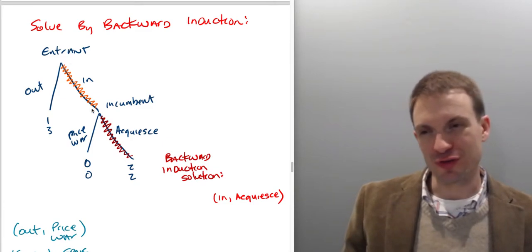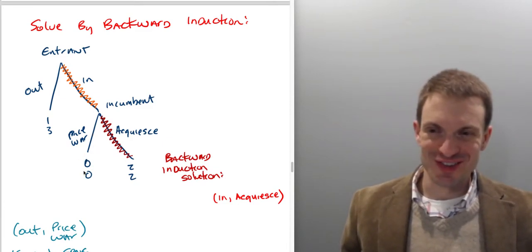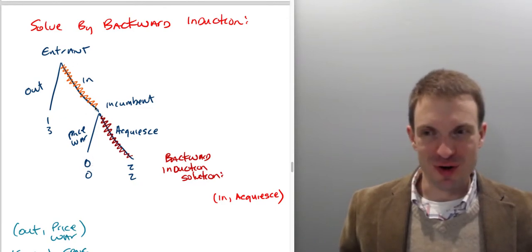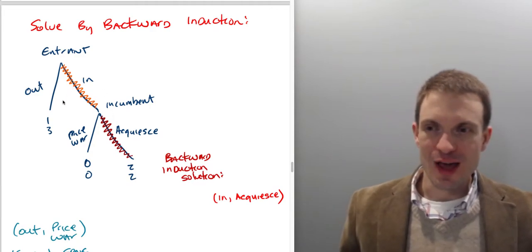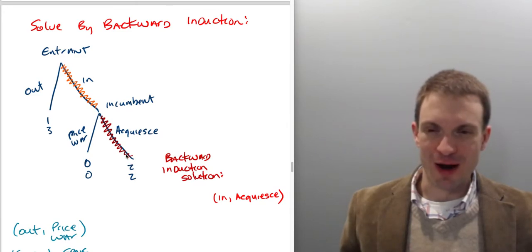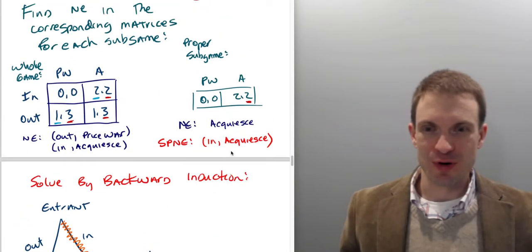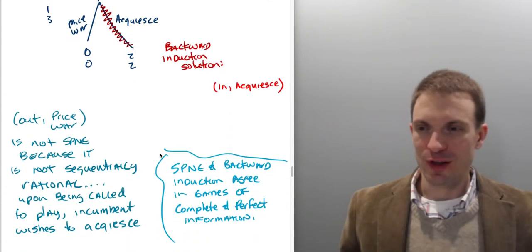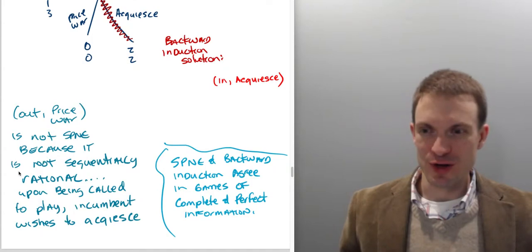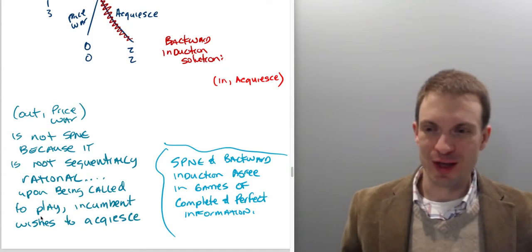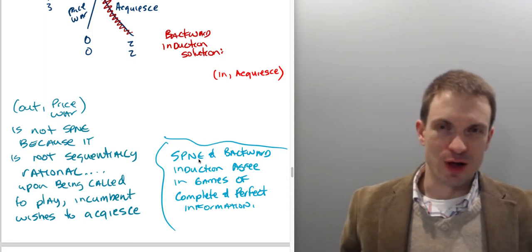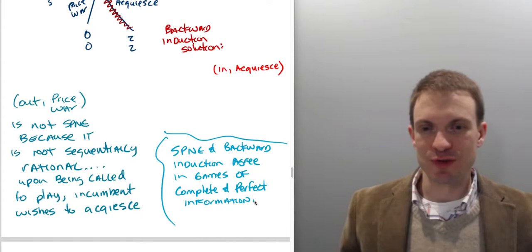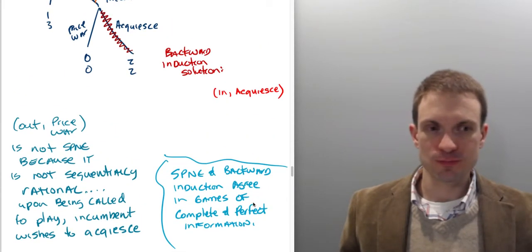Solving by backward induction gives the same answer. Going to the end of the game: two is bigger than zero, so shade acquiesce. Wrapping back to the start, the entrant looks forward, disregards price war and the zero payoff, and sees two — because they know if they enter, the incumbent will acquiesce. Comparing one (stay out) to two (enter), they enter. The backward induction solution is 'in, acquiesce,' exactly the SPNE. Sub-game perfect equilibrium and backward induction agree in games of complete and perfect information.